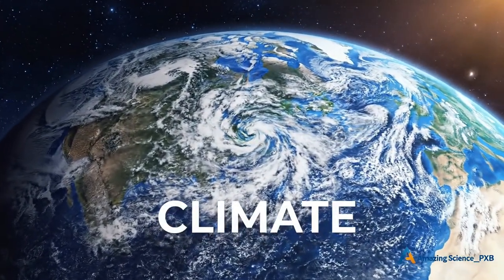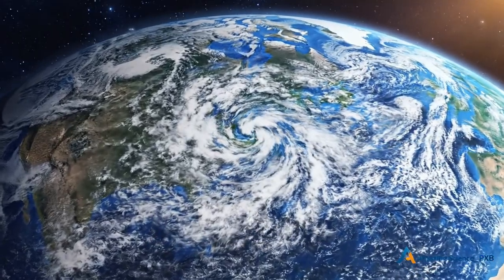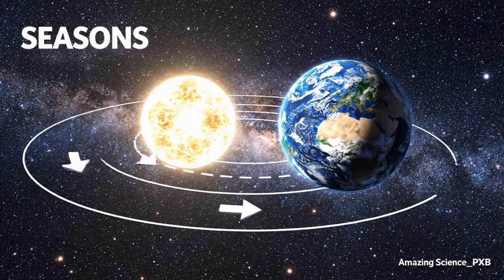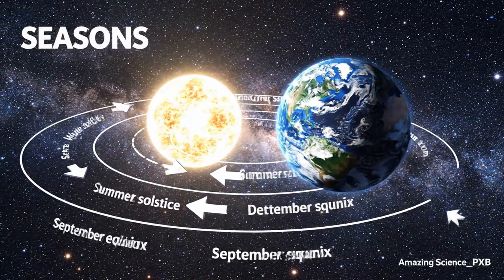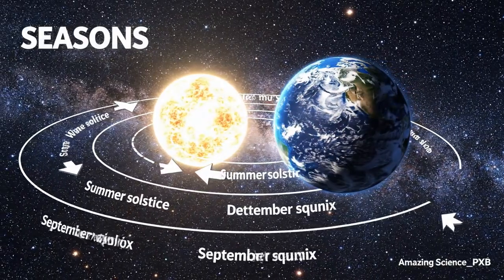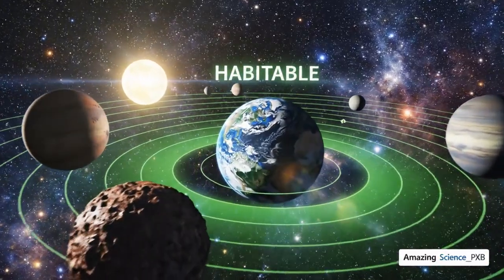Stable orbits create stable climates. Earth's orbit creates seasons. Earth lies in the habitable zone.